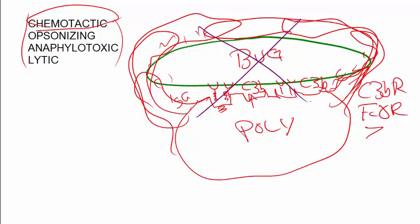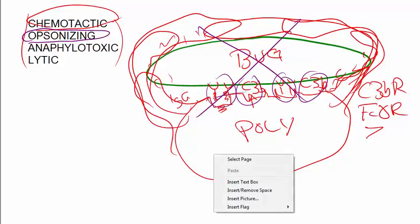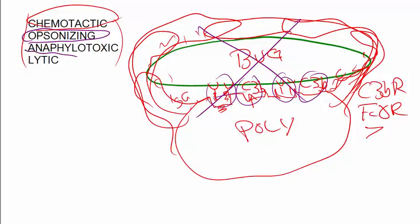Okay, so that second effect - this ability, once the poly has been attracted, to provide molecular handles so that the poly can grab it - is called opsonizing, from an old Greek word that means to prepare dinner basically. So it efficiently allows the poly to grab the bug and get it in because of these surface molecular handles.